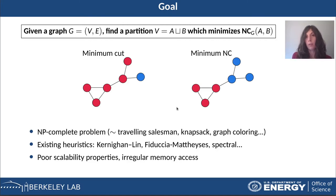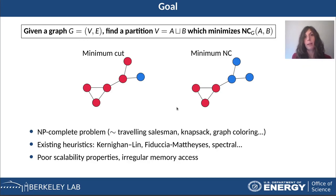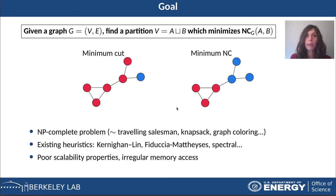For example, the Kernighan-Lin and Fiduccia-Mattheyses algorithms have an irregular memory access because of how they are designed, while spectral techniques are very expensive, especially for large graphs. Our idea was to tackle this problem with deep reinforcement learning.